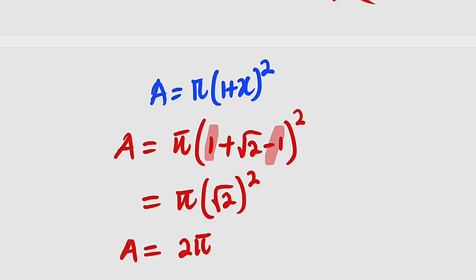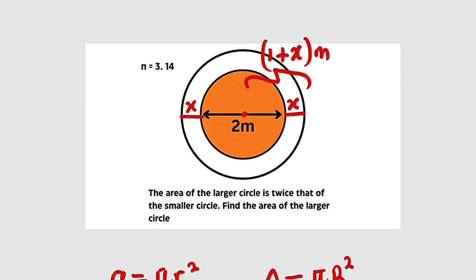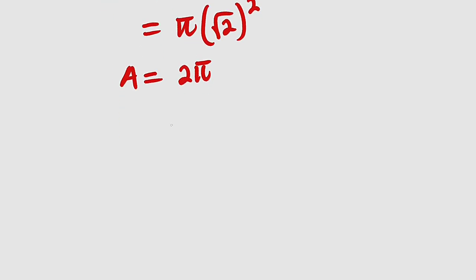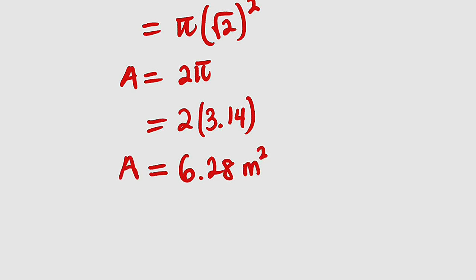But we are given the value of pi to use, which is 3.14. Therefore, finally, we have our area to be equal to 2 multiplied by 3.14. And if you multiply them together, you have 6.28. You can now bring back the unit, which is meter squared. And hence, the area of that bigger circle is 6.28 meter squared.